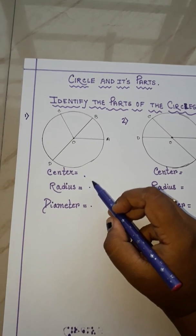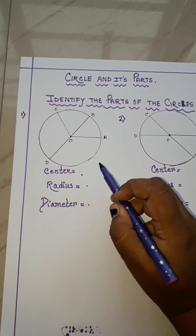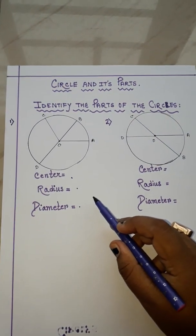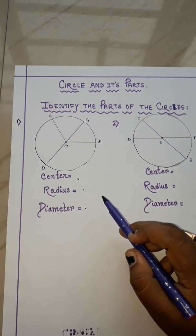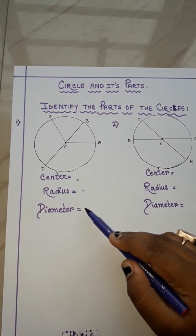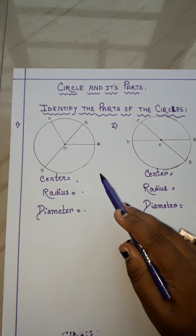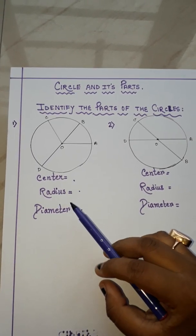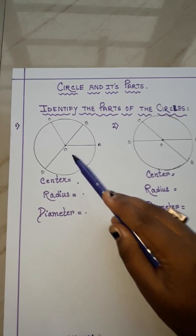But radius can be more than 1, like 2, 3, 4, whatever it is. And diameter also can be more than 1. But you should know which are radius and which are diameter. So you have to find the center, radius, and diameter of this circle.